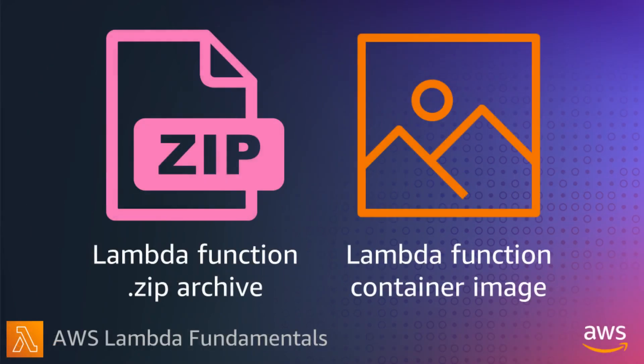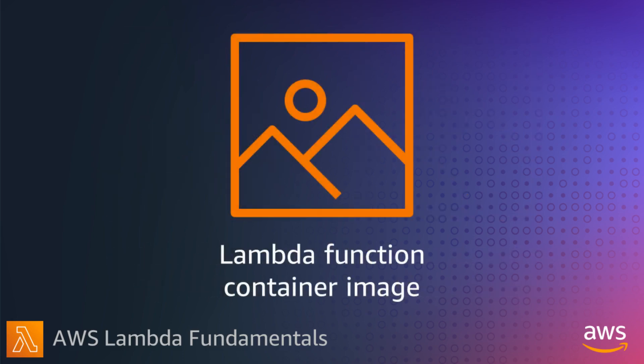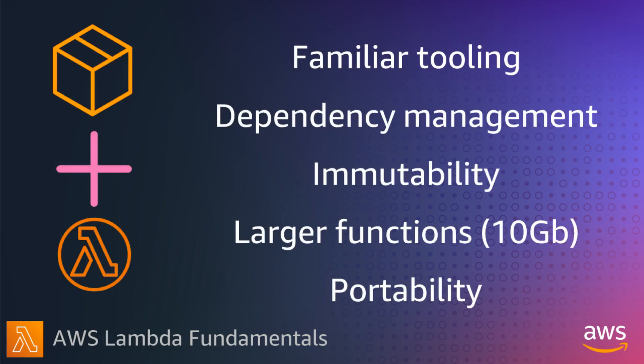Lambda supports two types of deployment packages: zip archives and container images. Lambda container image support enables you to pair the flexibility and familiarity of container tooling with the operational simplicity of Lambda for greater agility when building your applications. When using container images to build your functions, you define your container image using the OCI spec, like a Dockerfile. Building your functions as container images has a number of benefits.